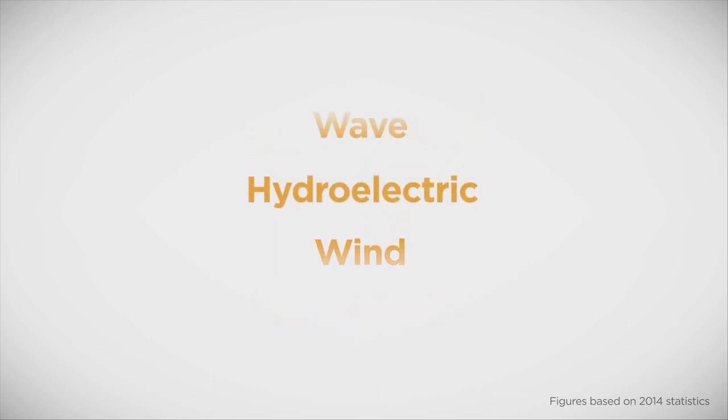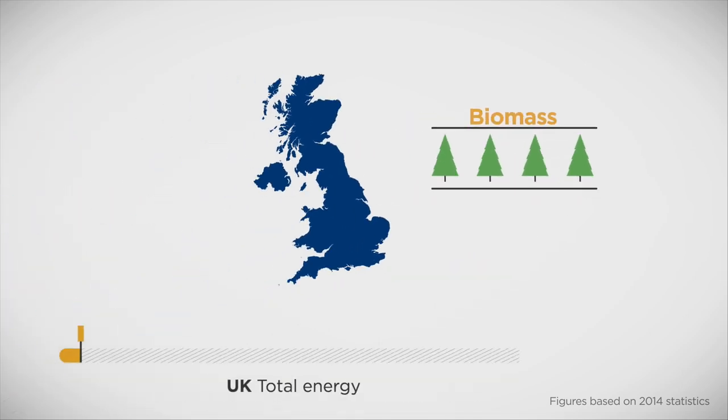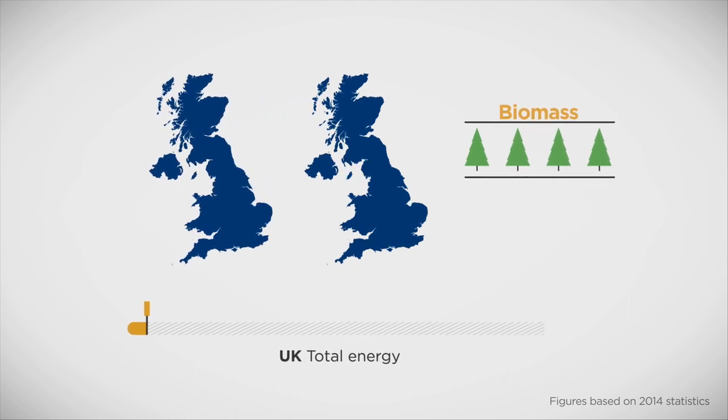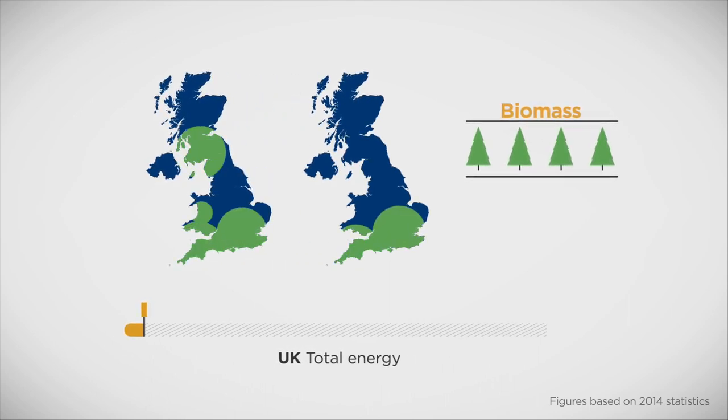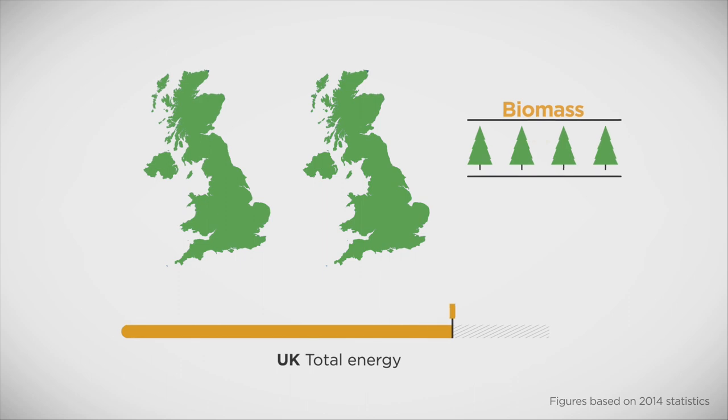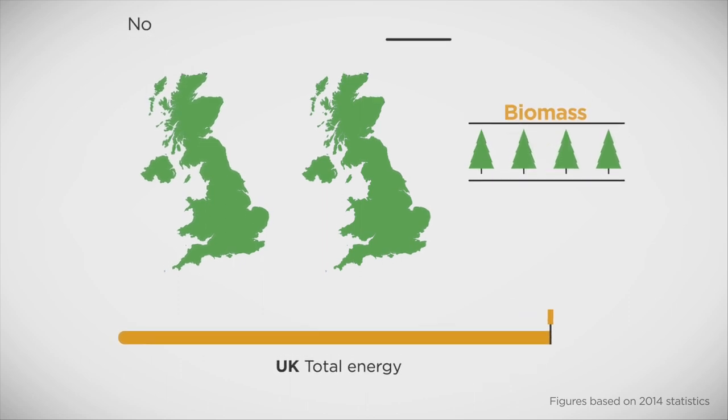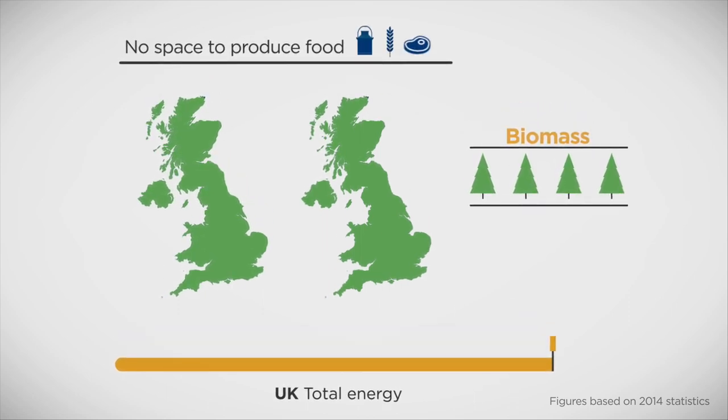Other renewable sources could provide some of our energy. For example, we could burn plant material. If we used roughly double the total UK land area, we could grow enough plant material to produce all our energy in this way. But there would be nowhere for us to live and produce our food.